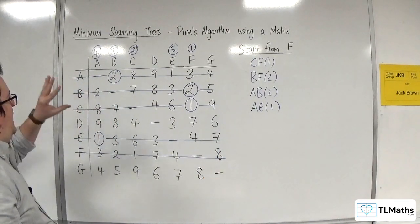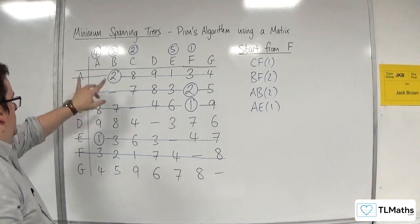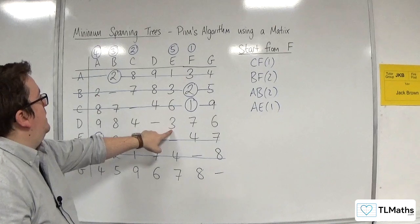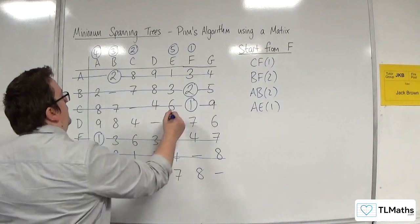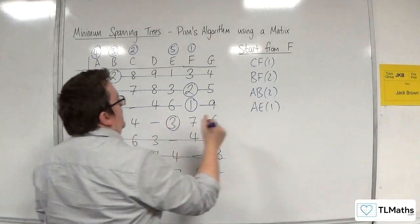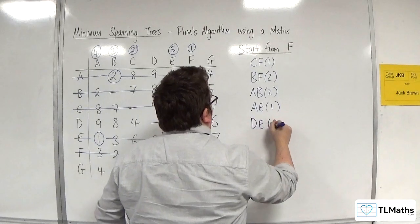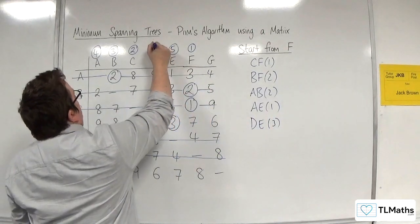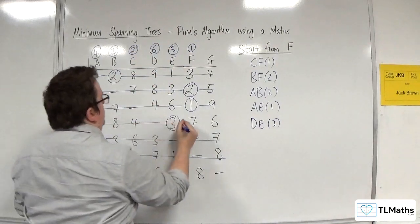Now I'm looking down A, B, C, E, and F. I've got 4s. I've got that 3 there. That's going to be the next best one. D, E with 3. D is now connected. That gets the number 6. We delete the rest of the row.